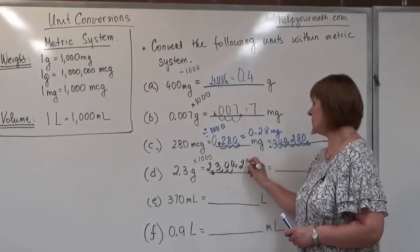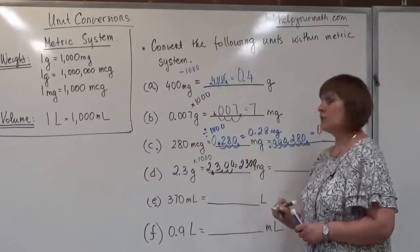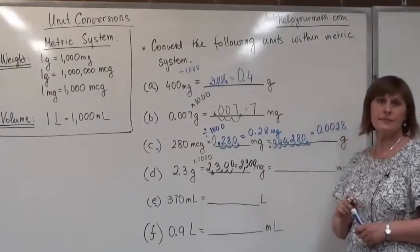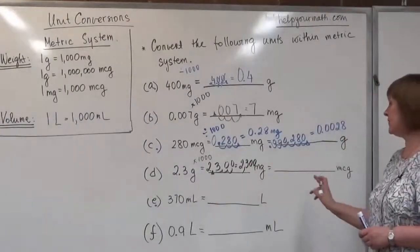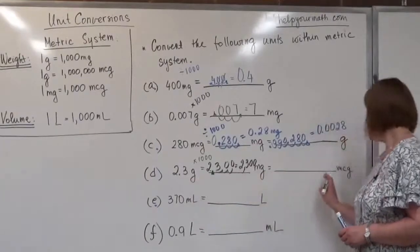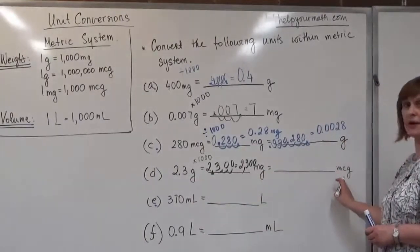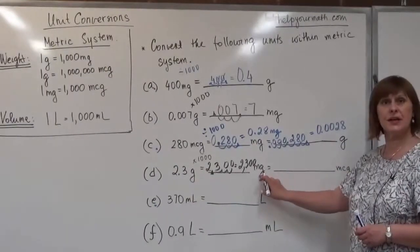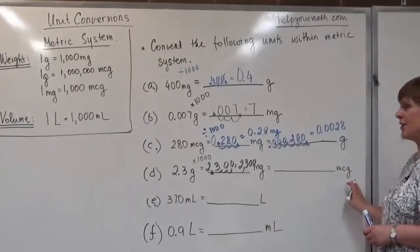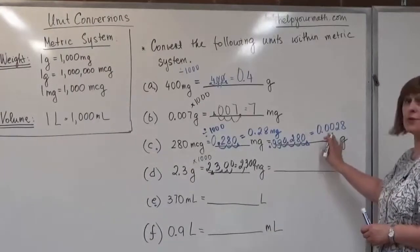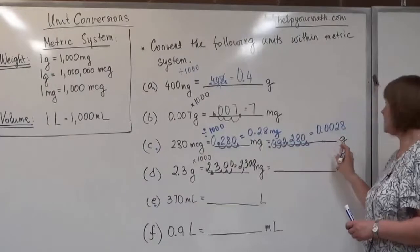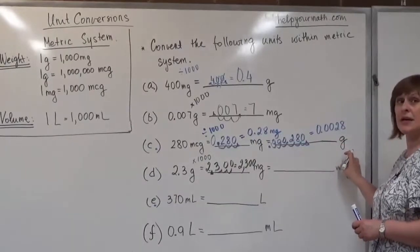We can also convert 2.3 grams directly to micrograms, or continue from milligrams to micrograms. Since we converted directly from micrograms to grams in Example C, let's try converting between milligrams and micrograms here.